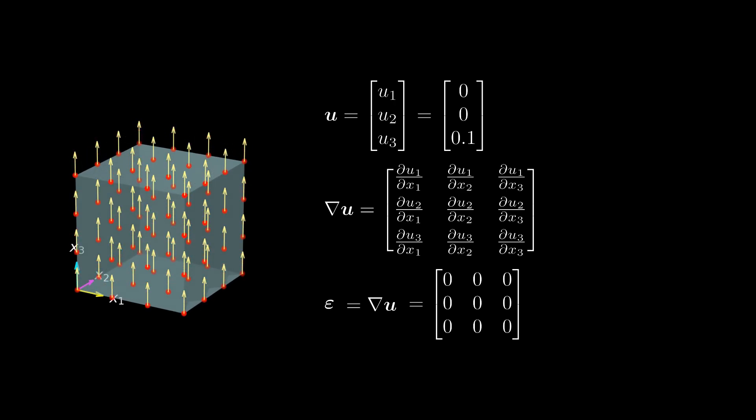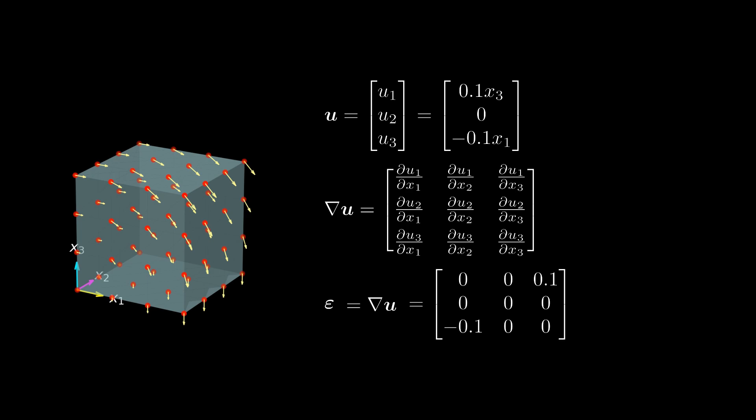But what happens for the other example? For rigid body rotation, the displacement gradient is non-zero. This means that the displacement gradient does not only contain information about the deformation of matter, but also information about the rotation of matter.